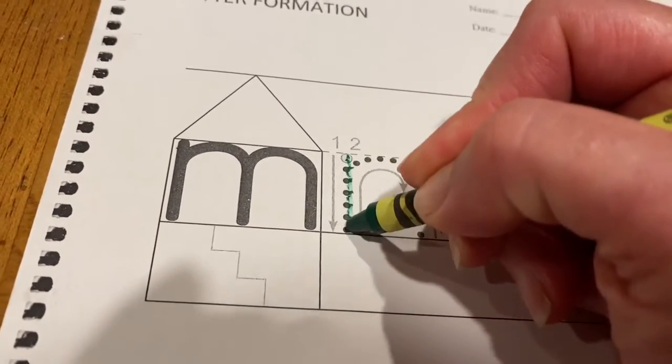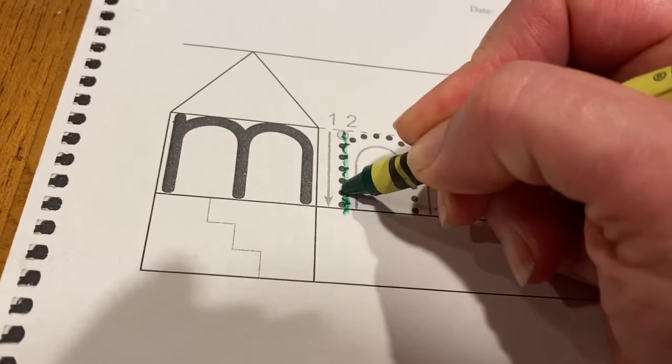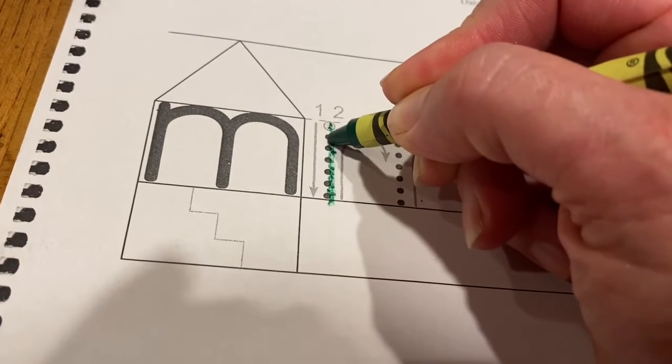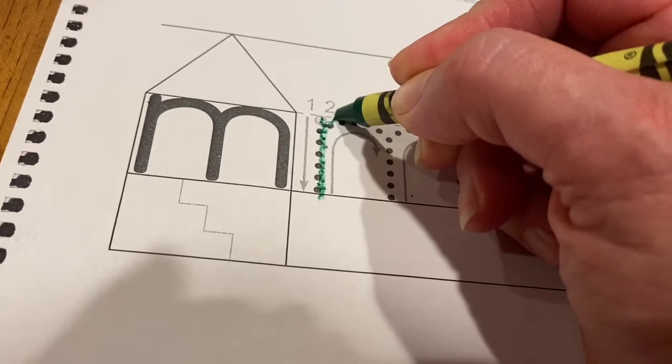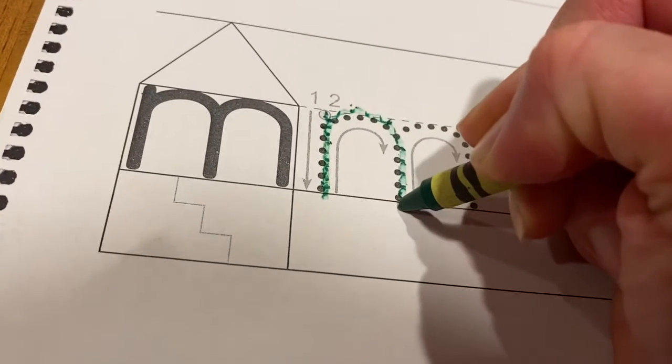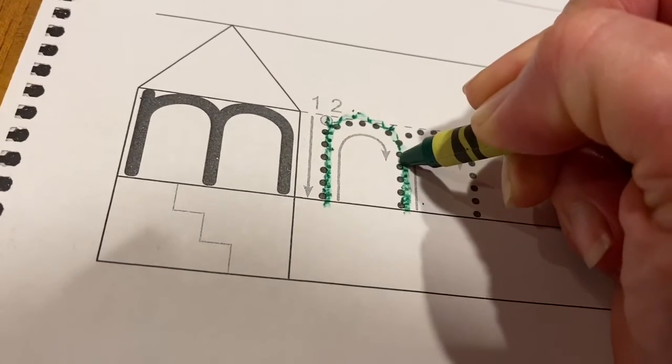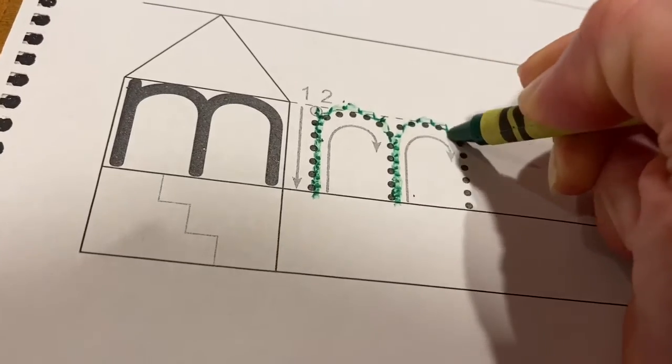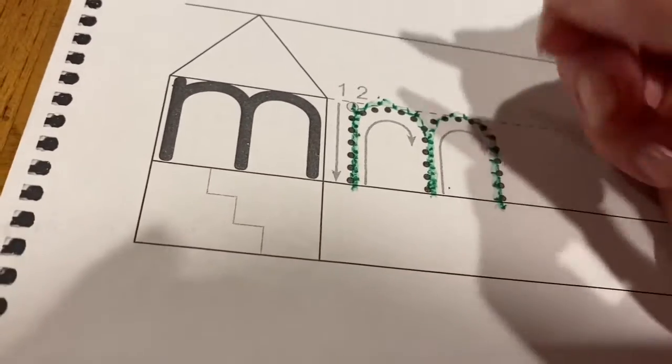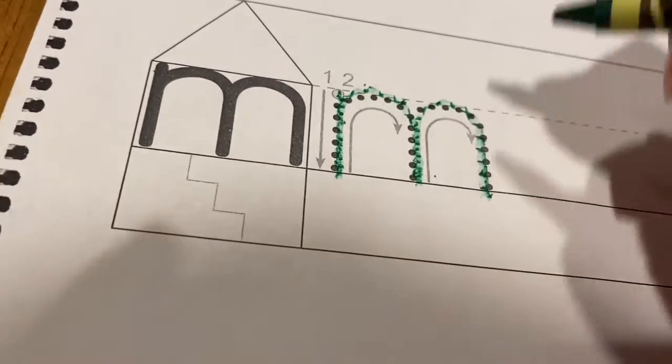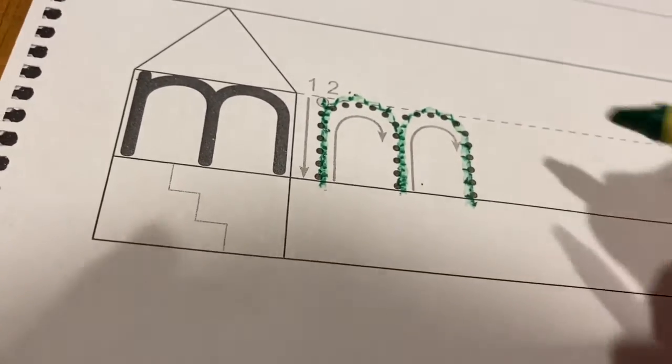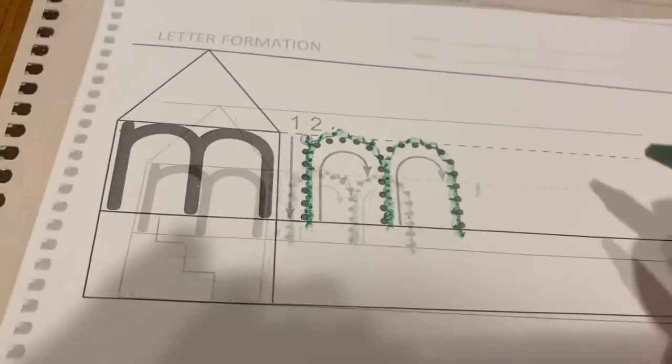We do a line down to the bottom, then we come up on the same line and just before we get to the top we scoop around, and we come back up on that same line and scoop around. Notice your scoops touch the middle line and all your lines down touch the bottom line.